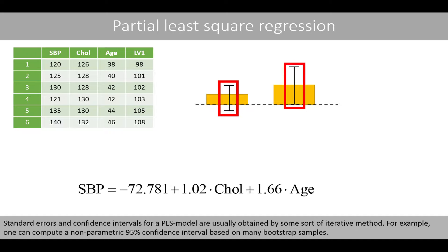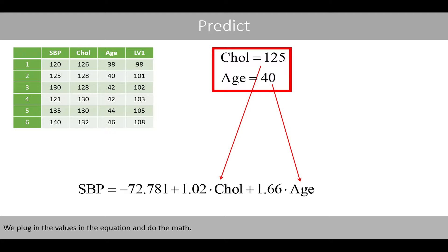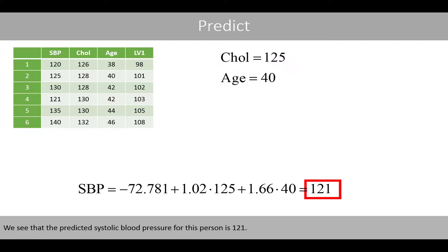Standard errors and confidence intervals for a PLS model are usually obtained by some sort of iterative method. For example, one can compute a nonparametric 95% confidence interval based on many bootstrap samples. Once we have established our partial least squares regression equation, we can use it for prediction. For example, let's say we like to predict the systolic blood pressure of a person with a cholesterol level of 125 and an age of 40. We plug in the values in the equation, and the predicted systolic blood pressure for this person is 121.